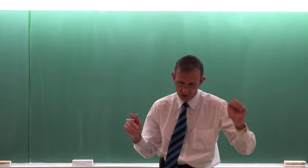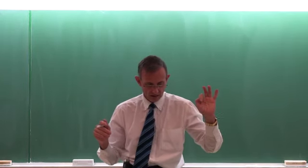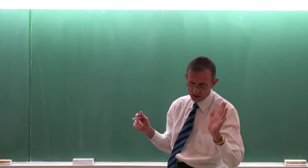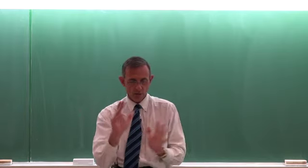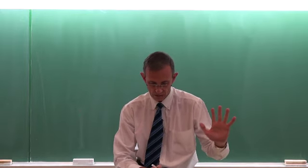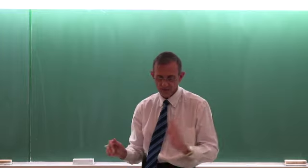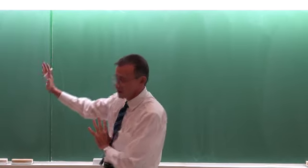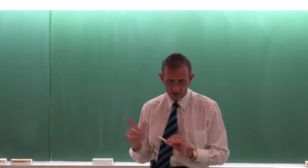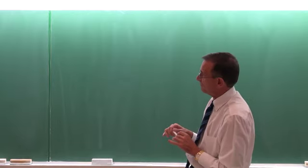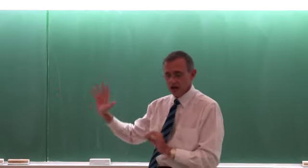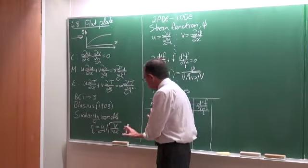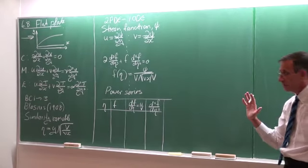We've already done the first parts: the physics of convection, classifications of fluid flow, velocity boundary layer, the thermal boundary layer, laminar and turbulent flow, heat and mass transfer in turbulent flow, and the derivations of differential convection equations. With the previous lecture, we started looking at the solutions of convection equations for a flat plate. We didn't finish it, and this is some of the most important work.